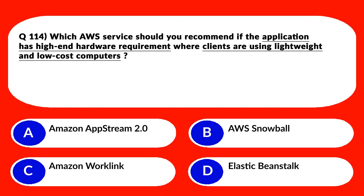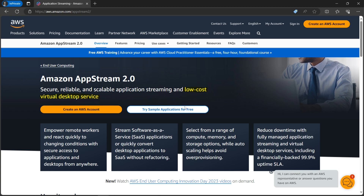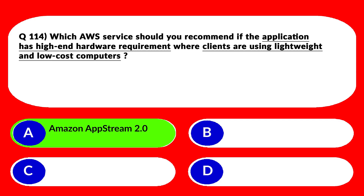We are at question number 114. We'll look at option B first. B says AWS Snowball — as seen in the previous question, Snowball is a data migration service from on-premises to cloud. The question is not about migration at all, so we don't need Snowball. B is out. Let's move to options C and D together. C says Amazon WorkLink, D says Elastic Beanstalk. Amazon WorkLink and Elastic Beanstalk do not help to stream desktop applications to web browsers as required by the question. Looking at the official documentation, it states Amazon AppStream 2.0 is a low-cost virtual desktop solution — that's what we require. We'll lock option A as the correct answer.